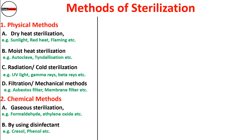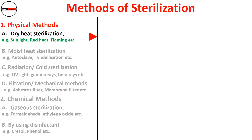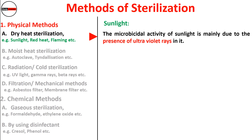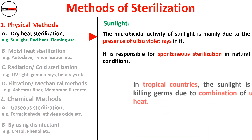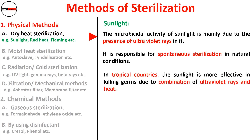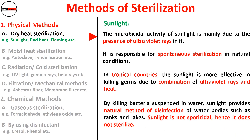Starting with dry heat sterilization: sunlight can be used for sterilization. The microbicidal activity of sunlight is mainly due to the presence of UV rays in it, and it is responsible for spontaneous sterilization in natural conditions. In tropical countries, sunlight is more effective in killing germs due to a combination of UV rays and heat, and it provides a natural method of disinfection for water bodies such as tanks and lakes by killing suspended bacteria.